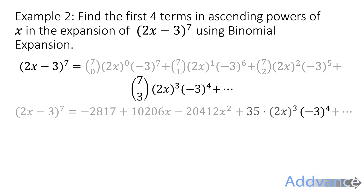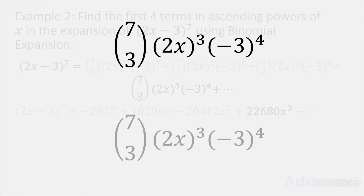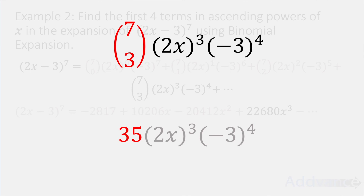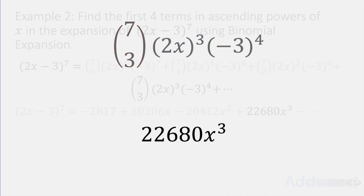For r = 3: 7C3 = 35, (2x)³ = 2x × 2x × 2x = 8x³, and (−3)⁴ = 81. Multiply all together: 35 × 8 × 81 = 22680. So the fourth term is 22680x³. That's our final answer for the first four terms.